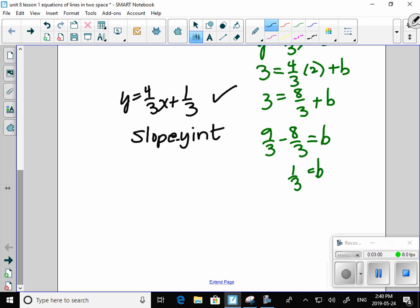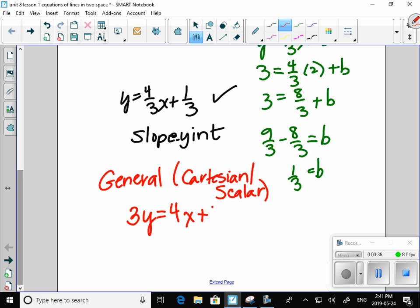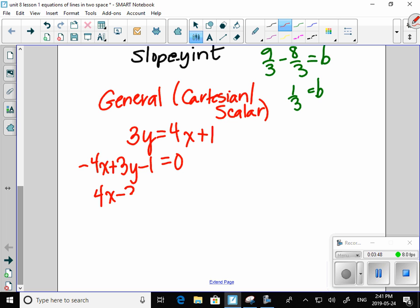We also said, you know what? We have a better form that's a little prettier and we call it general form. Today we're also going to call it Cartesian or scalar. And we had general form in grade 9 where we have no fractions, everything on the left side and the x leading coefficient is positive. So if I want to get this into general form, I would multiply everything by 3. I would put everything on the left side. And I would make sure the leading coefficient was positive just by tradition. And that would be general form, Cartesian or scalar.